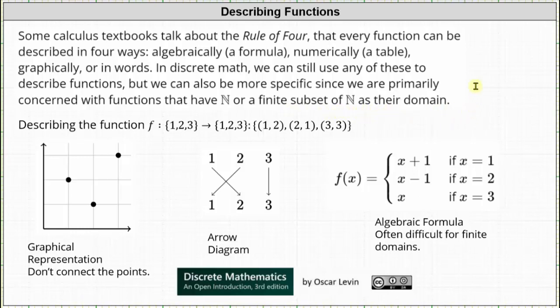Let's look at several ways to describe the same function. First we have the function f that maps the set containing the elements one, two, and three to the set containing the elements one, two, and three, such that the function is the set of ordered pairs (1, 2), (2, 1), and (3, 3), which indicates the function rule is: one maps to two, two maps to one, and three maps to three.